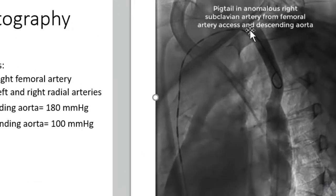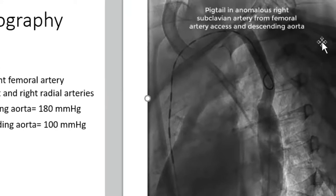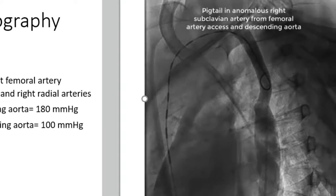And now the catheter is in the anomalous right subclavian artery, approached from the femoral artery axis and descending aorta.